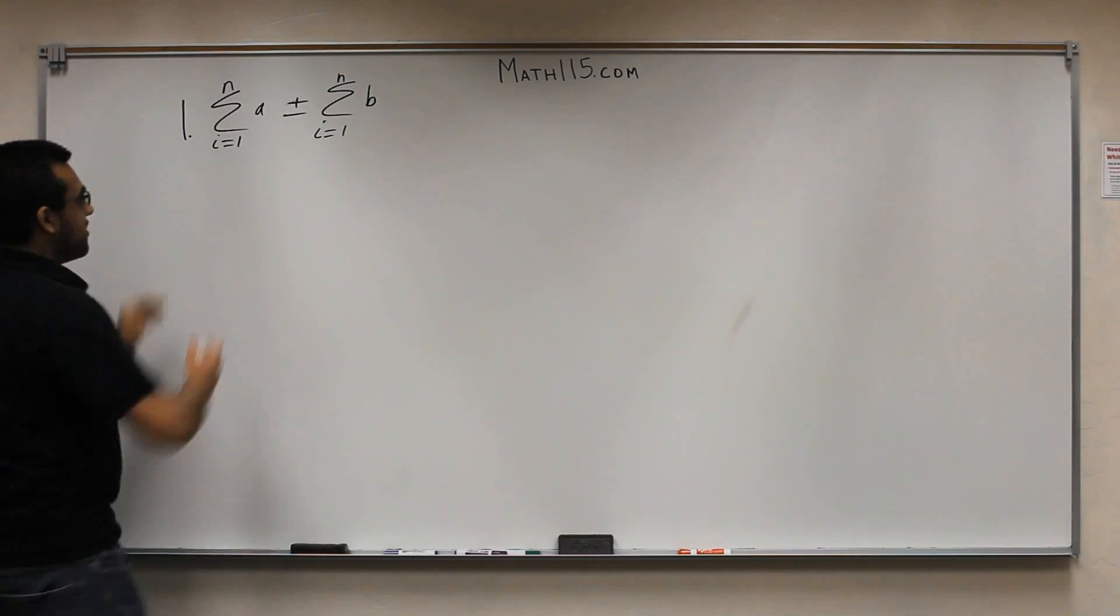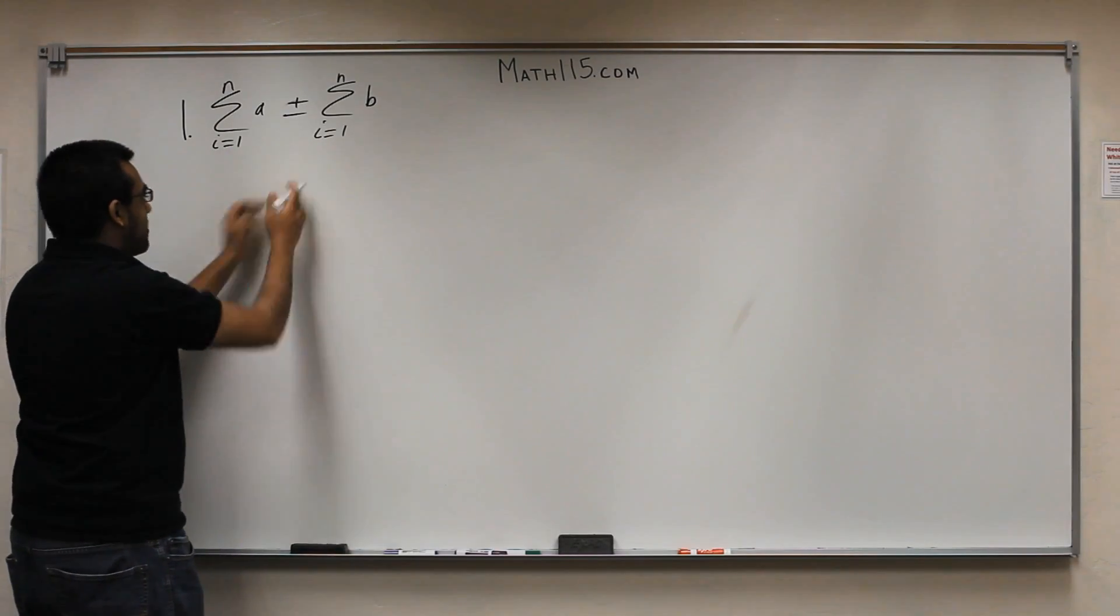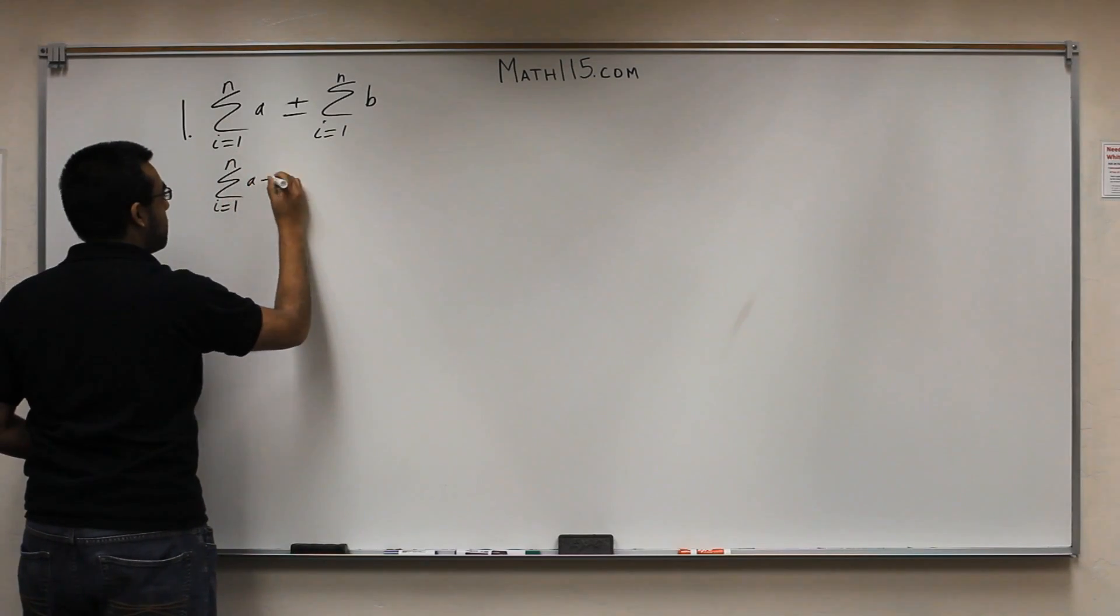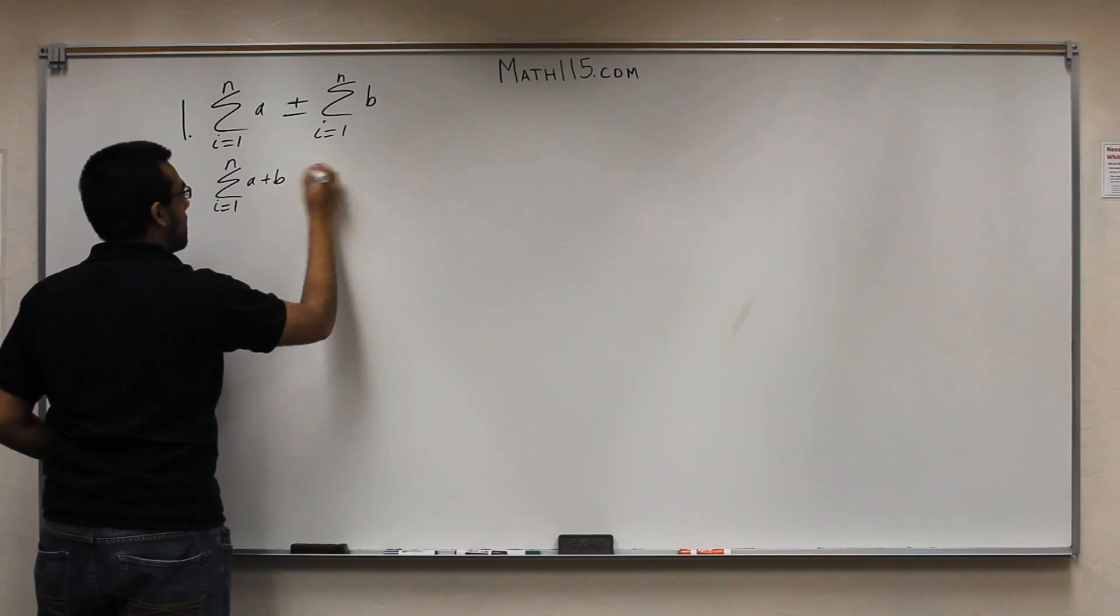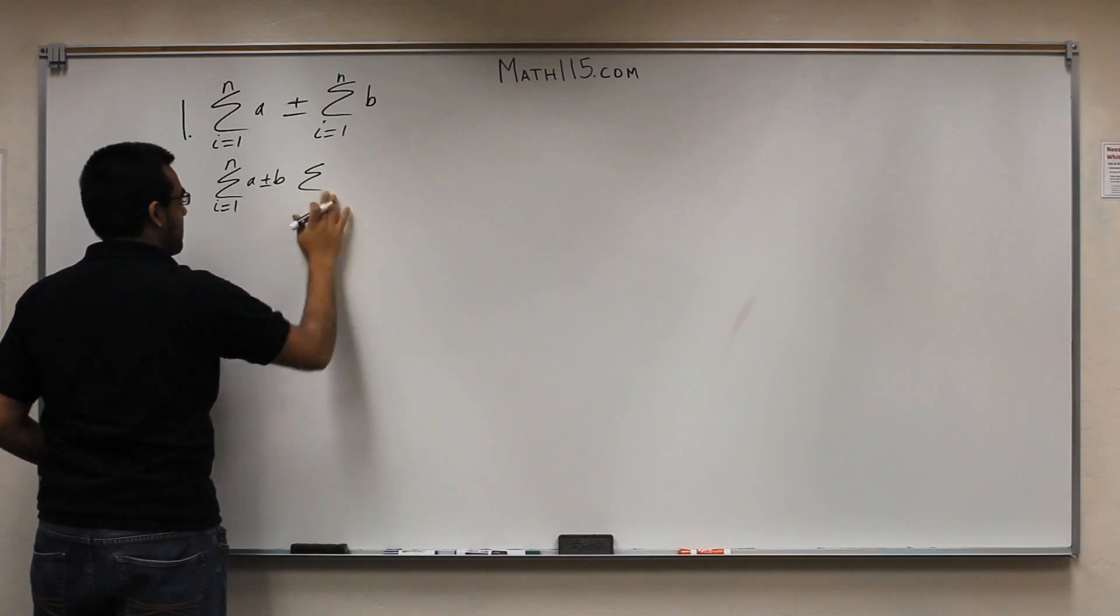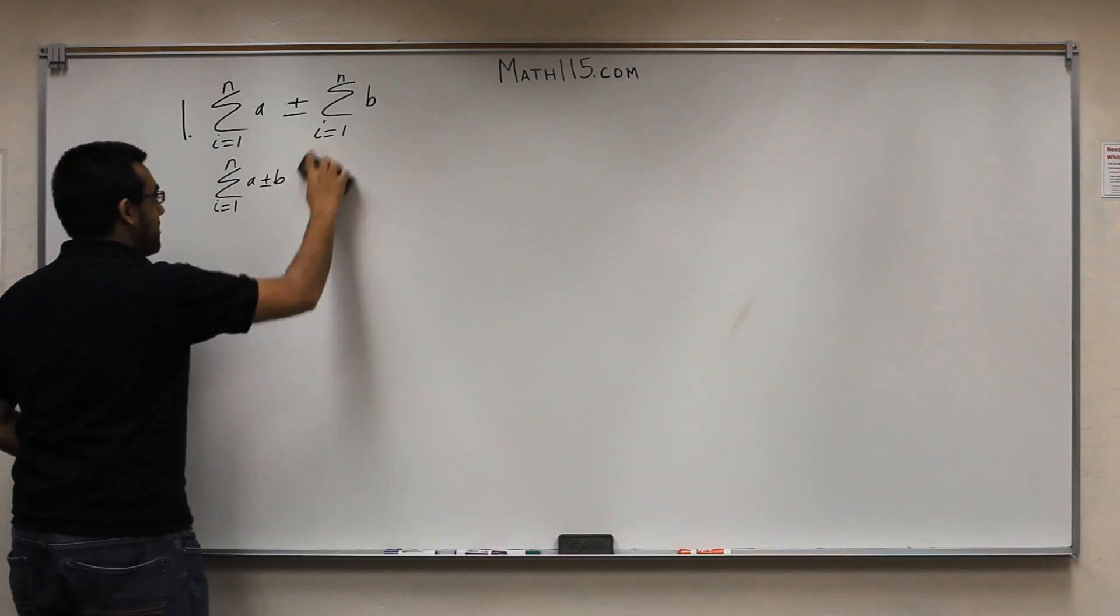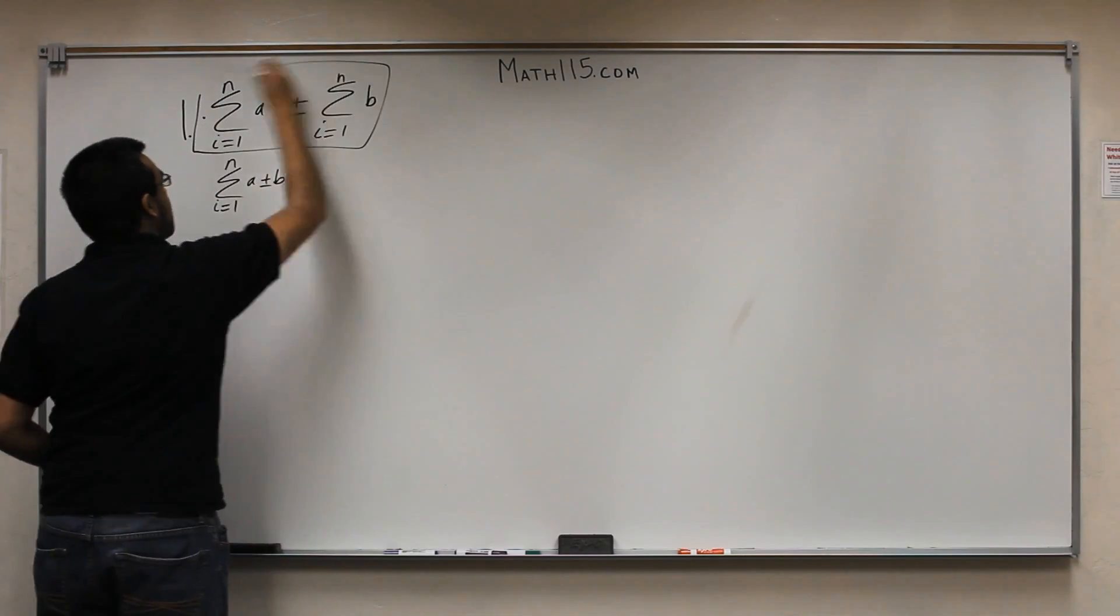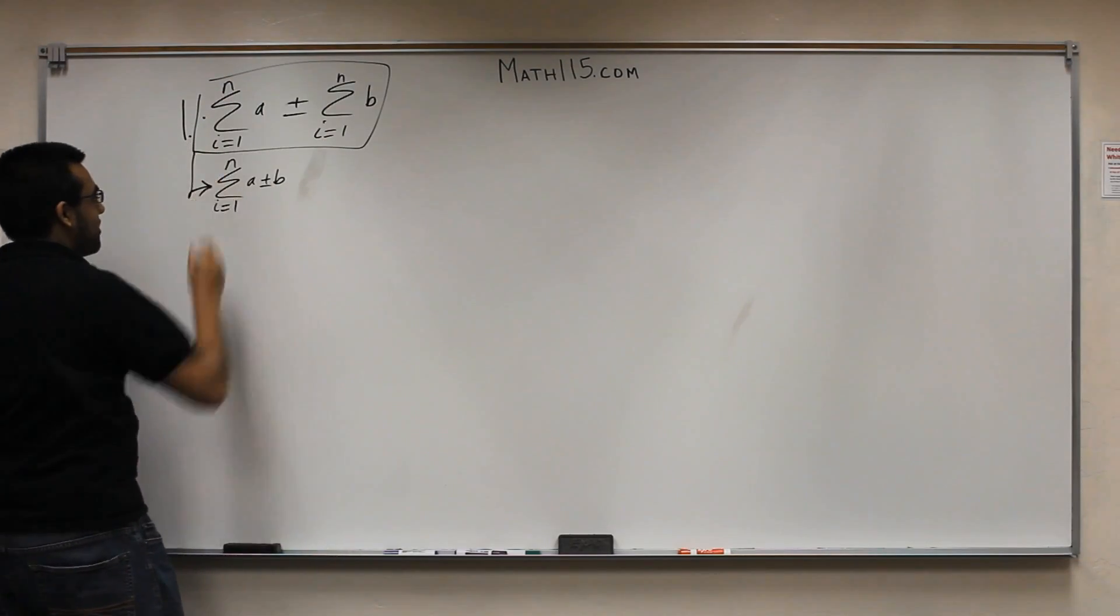Well, the first property says that you can combine these together. So, looking at this, i equals 1 and a plus b, or minus. So, this whole line is the same thing as this line right here. So, in other words, what it's saying is that you can combine two summations, plus or minus.